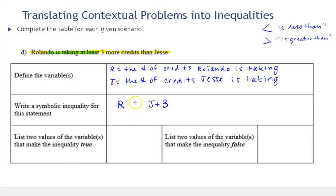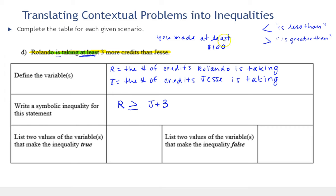The question is what inequality symbol to use. Think about money: if you made at least one hundred dollars tonight, you could have made exactly a hundred or more than a hundred. So 'at least' means greater than or equal to. I apologize for the English language — 'least' looks very much like 'less than,' but it's actually greater than or equal to. And as we saw earlier, 'at most' looks like greater than but is actually less than. Putting them in a familiar context really helps.